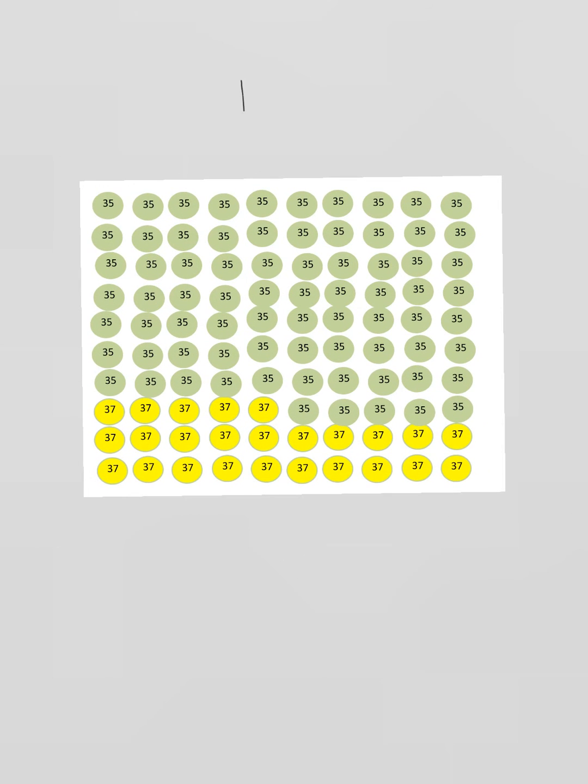I'm just going to zoom into this. In this jar we have 100 atoms of chlorine. If you count up, you'll see that there are 75 atoms that have a mass of 35.